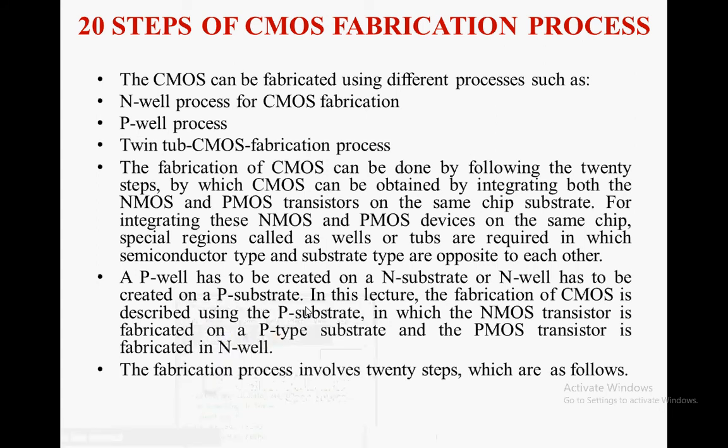Hello, good morning. Welcome to today's lecture on CMOS fabrication process. CMOS can be fabricated using different processes such as N-well process. The fabrication of CMOS can be done by following 20 steps, by which CMOS can be obtained by integrating both NMOS and PMOS transistors on the same substrate. For integrating these NMOS and PMOS devices on the same chip, special regions called wells or tubs are required, in which the semiconductor type and substrate type are opposite to each other.